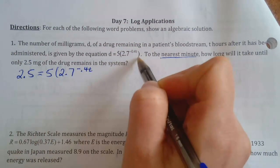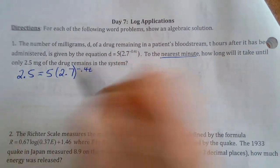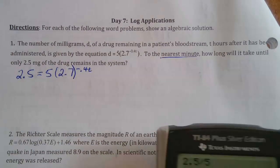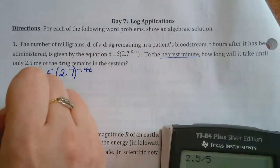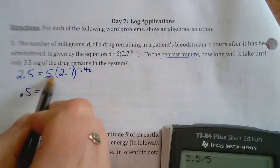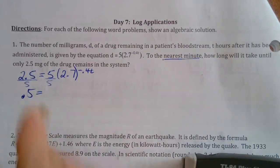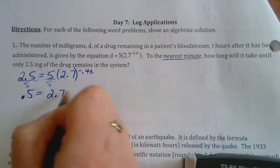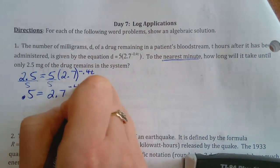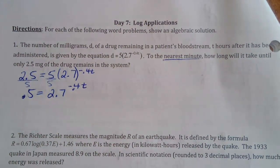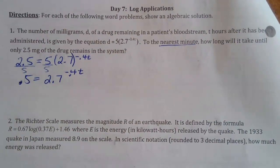So 2.5 divided by 5 is 0.5 — that's where the 0.5 is coming from. We have 2.7 to the negative 0.4T. Just like yesterday, we cannot get common bases in this way.